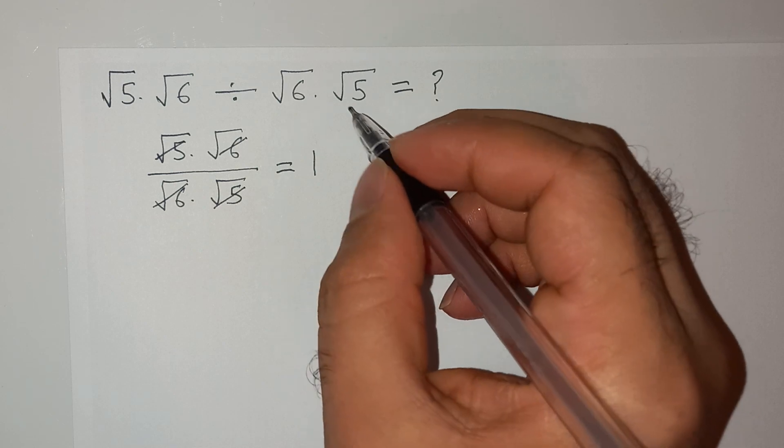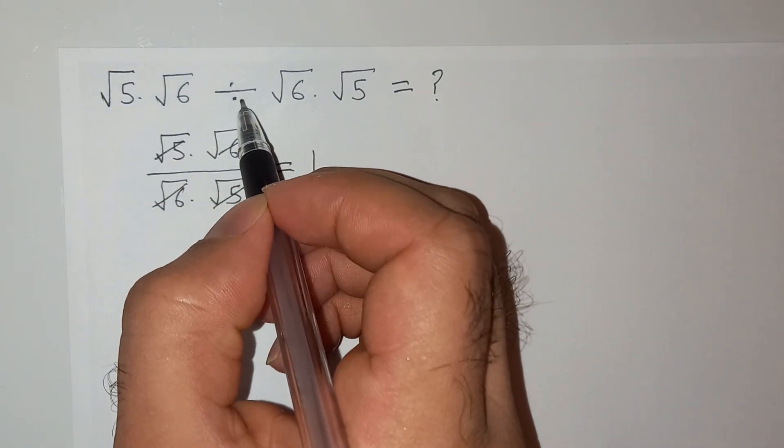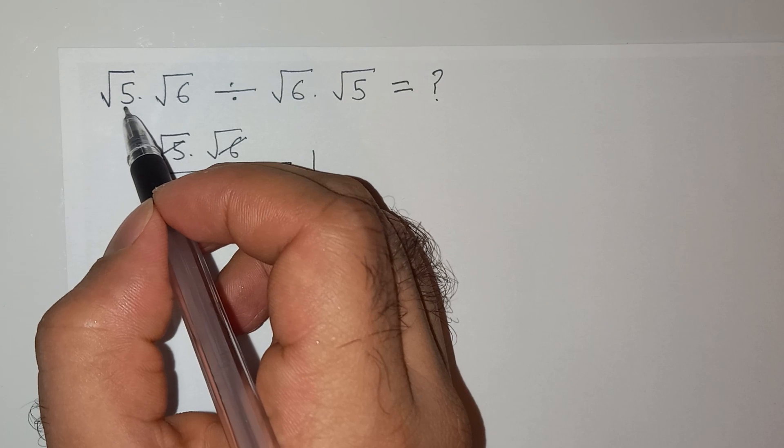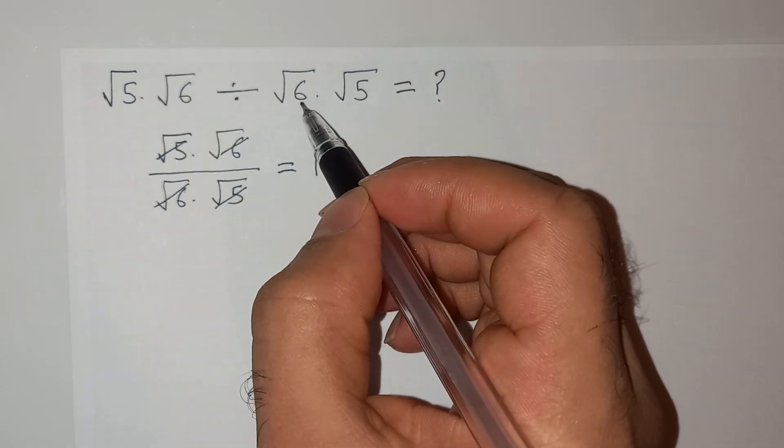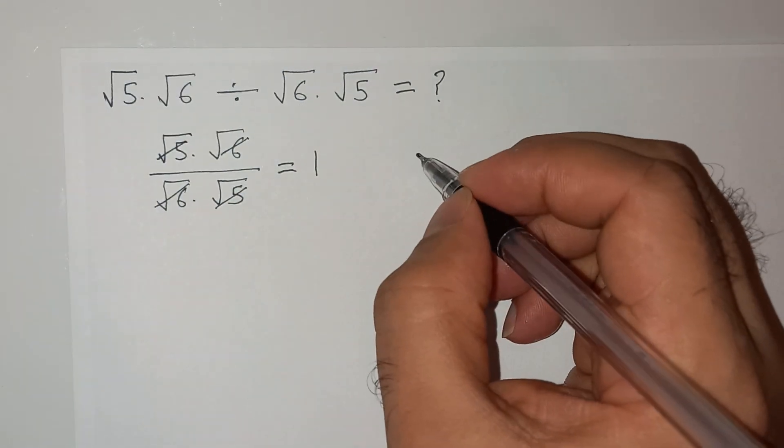If we apply the BODMAS rule we have to use this division first. So we will divide this term with √6. Let me write it here.